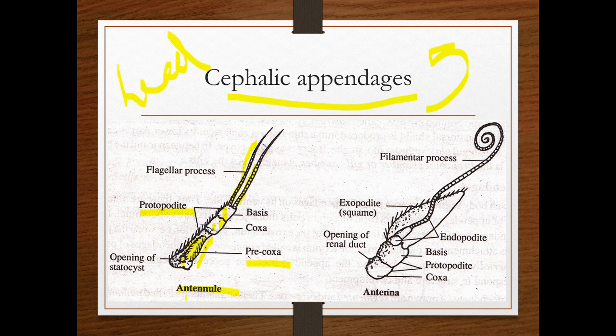The antennule is the first cephalic appendage. It is a biramous appendage. The protopodate is three-segmented: precoxa, coxa, and basis. Precoxa has a concavity for the eyes. There is also an opening of the statocyst. The exopodite and endopodite are absent; instead there is a flagellar process.